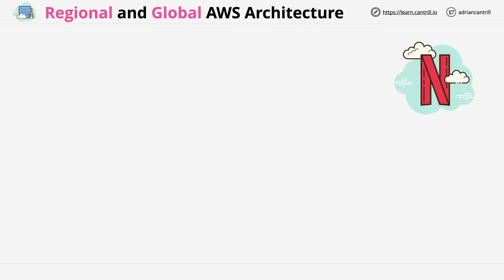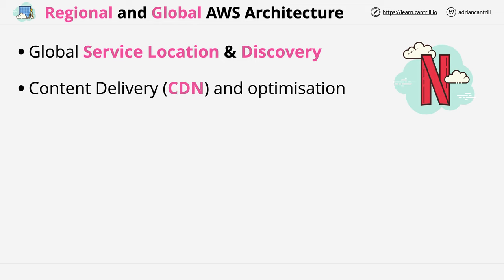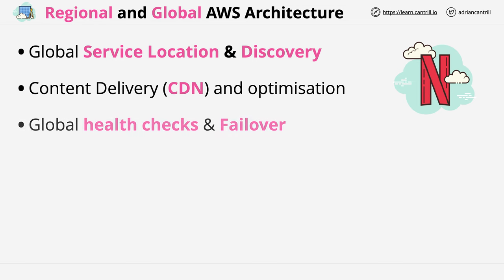Depending on how you architect systems, there are a few major architectural components which will map on to AWS products and services. At a global level, first we have global service location and discovery — so when you type netflix.com into your browser, how does your machine discover where to point at? Next, we've got content delivery: how does the content or data for an application get to users globally? Are there pockets of storage distributed globally, or is it pulled from a central location? Lastly, we've got global health checks and failover — detecting if infrastructure in one location is healthy or not, and moving customers to another region as required.